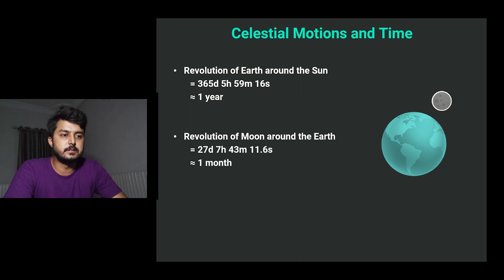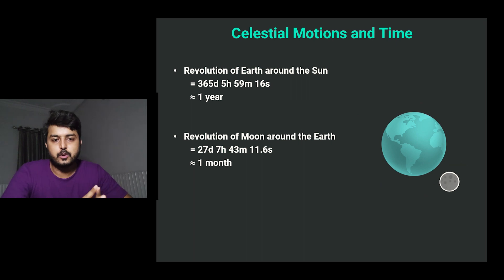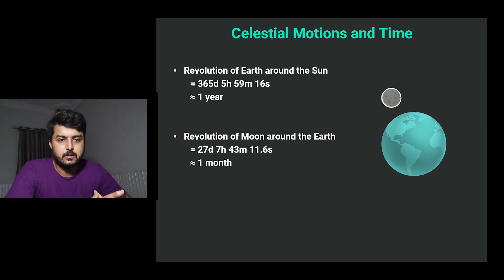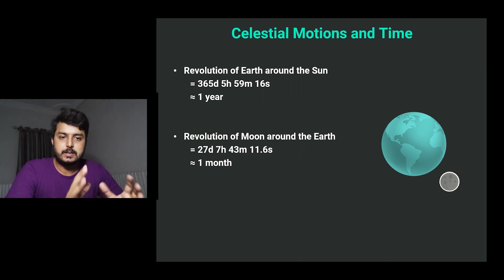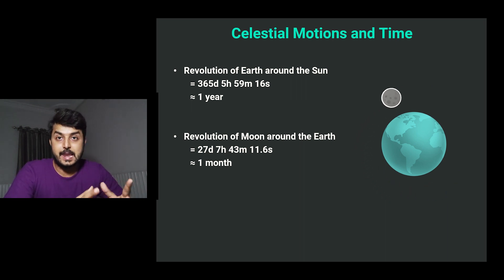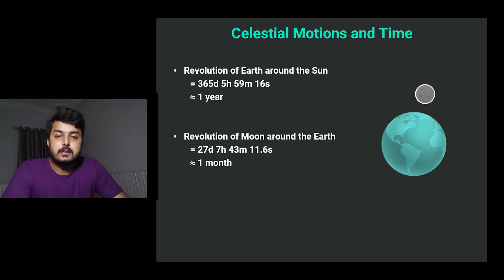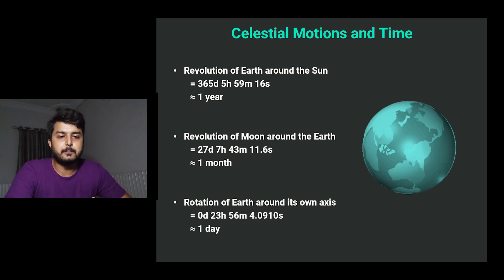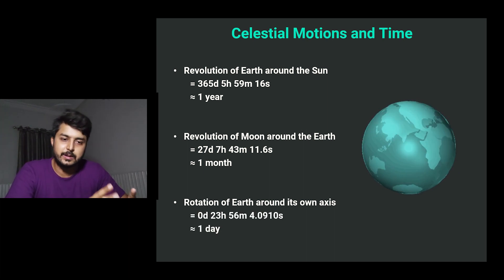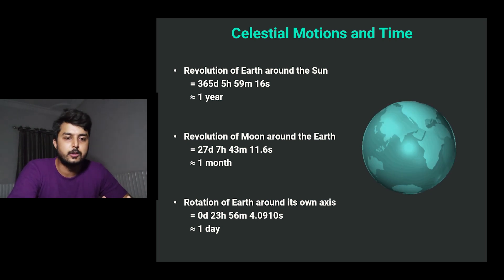We also have the revolution of the Moon around the Earth on its orbit. It takes 27 days, 7 hours, 43 minutes, and 11.6 seconds — approximately one month. The lunar month is 29 or 30 days, and we will discuss why there is a lag of about two days between the orbital motion and the lunar month. The third celestial motion is the rotation of Earth around its own axis, which takes approximately 23 hours, 56 minutes, and 4.091 seconds — one day.